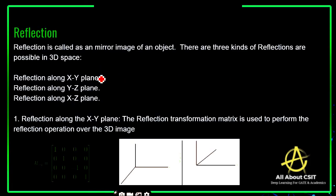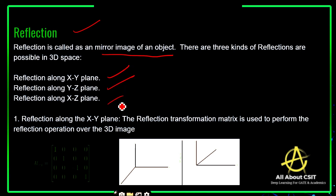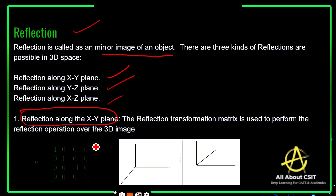Now coming to the last type of transformation: reflection. The word itself says it is a mirror image of an object. There are three kinds of reflections possible in 3D space: reflection along the XY plane, YZ plane, and XZ plane. The reflection transformation matrix is used to perform the reflection operation over the 3D image.